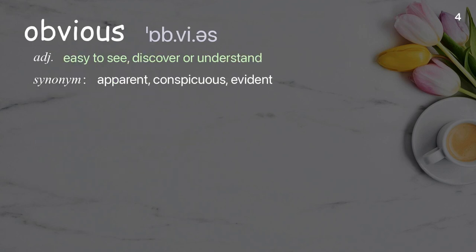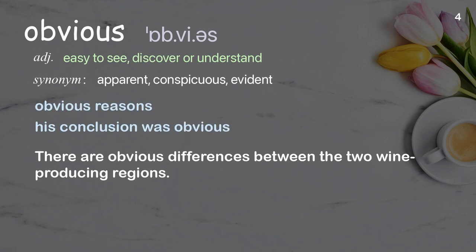Obvious: Easy to see, discover, or understand. Examples: obvious reasons, his conclusion was obvious. There are obvious differences between the two wine-producing regions.